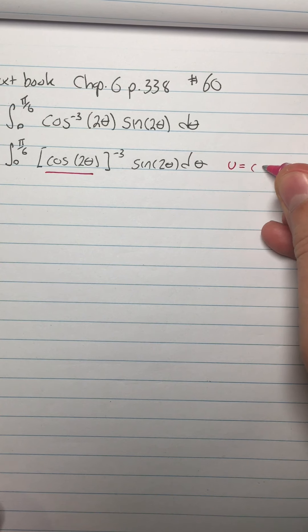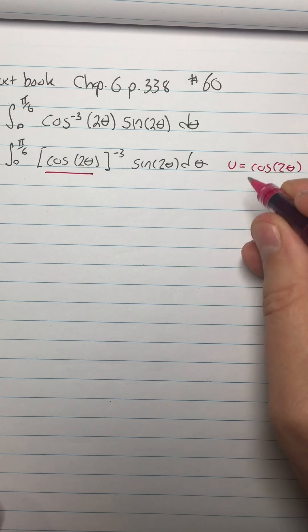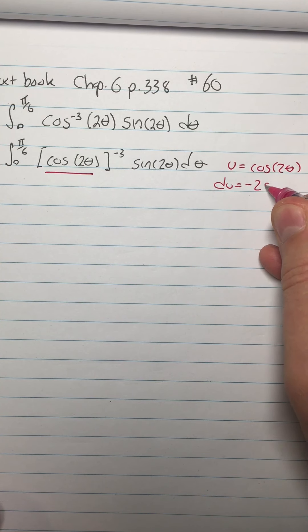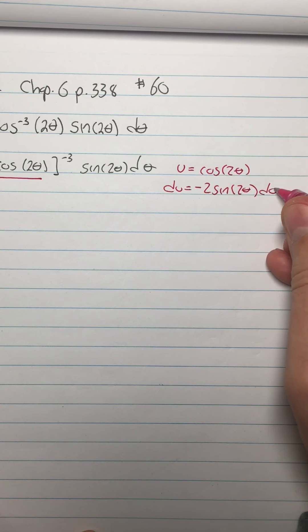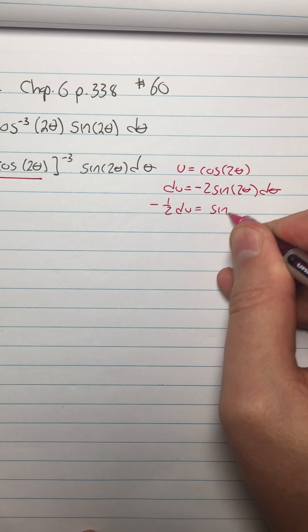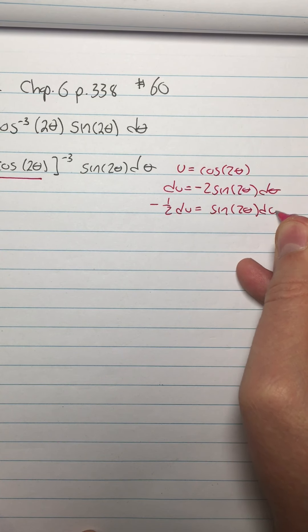So we'll do u equals cosine of 2 theta. And so du equals negative 2 sine of 2 theta d theta. So negative 1 half du equals sine of 2 theta d theta.